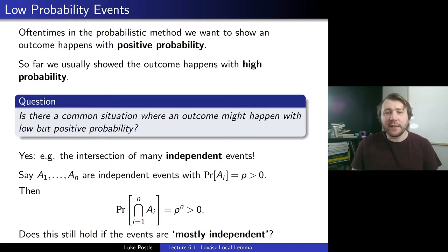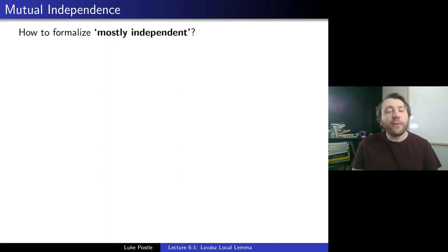So the question is: does this still hold if the events are mostly independent? That'd be quite natural — maybe we don't have full independence, but maybe we have somehow mostly independent events. And then this would be a nice outcome to have, and would differ from the high probability type proofs we've done before.